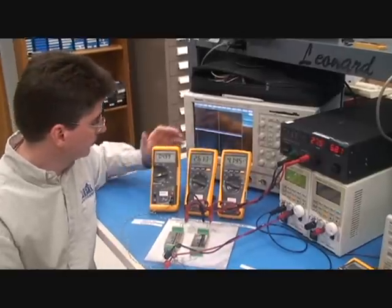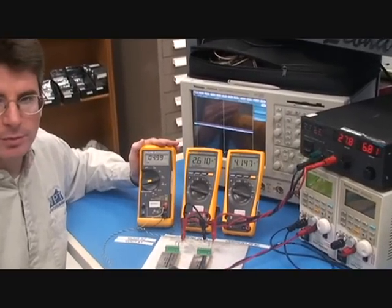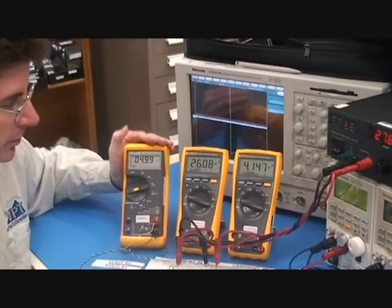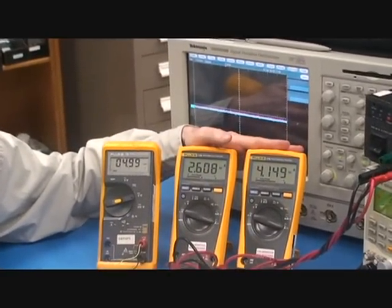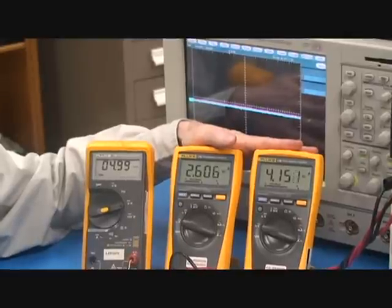On the meters, we have the output voltage, 4.99 volts. And on these two meters, we have the input current of each DVFL. The current share is not currently connected.